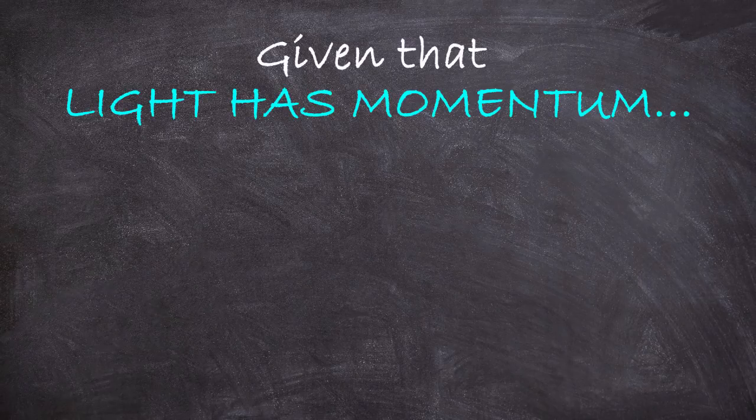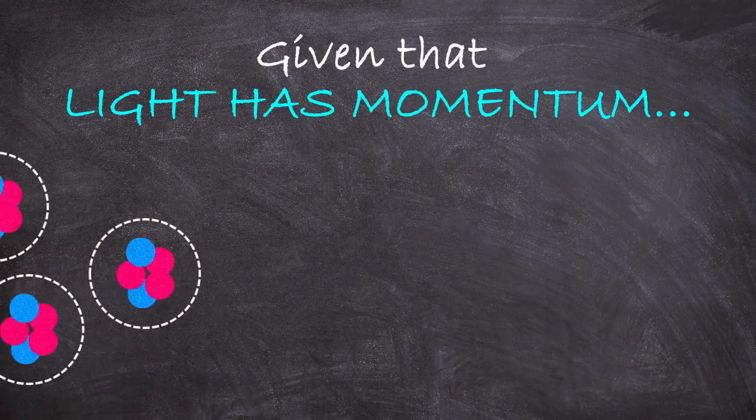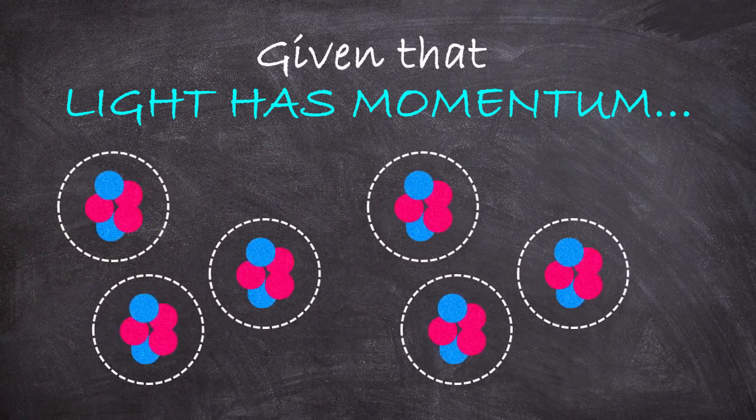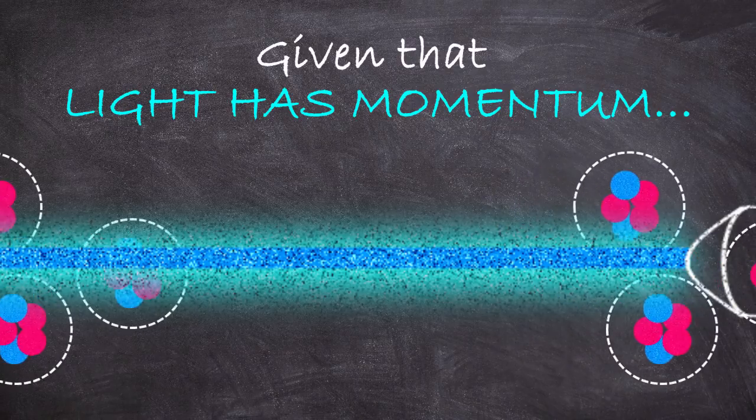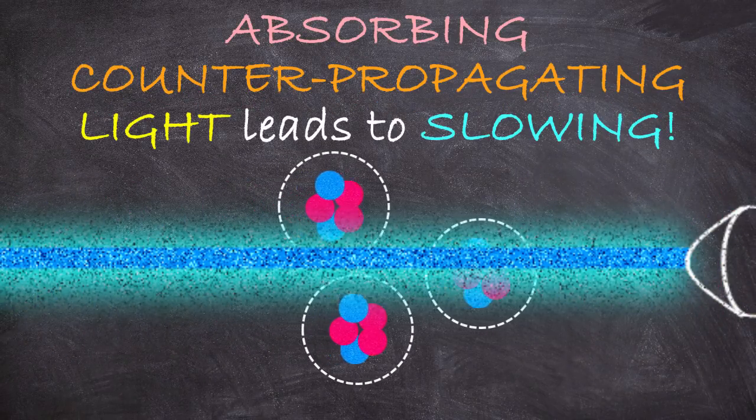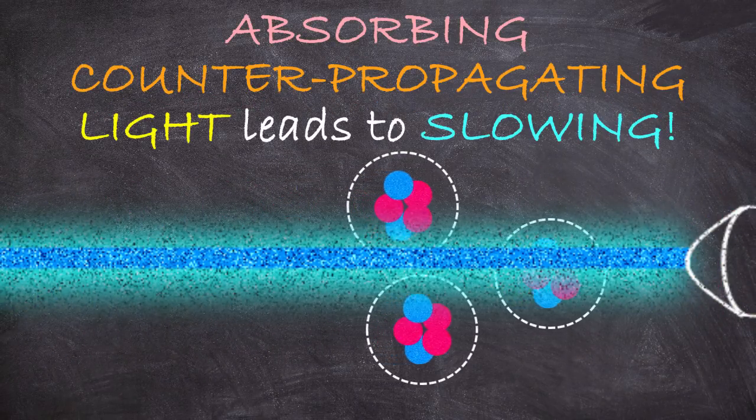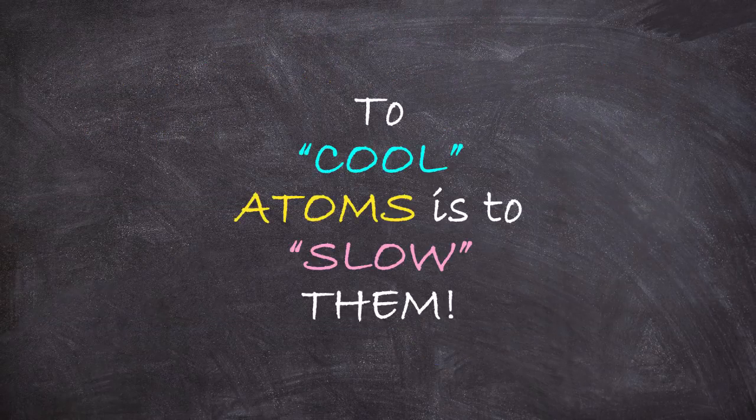But given that light has momentum, then if I have a beam of atoms heading to the right, and I have a laser beam shining to the left, well, if those atoms absorb that light, they are then pushed to the left and thus are slowed down. And to cool something, that's what we want to do.